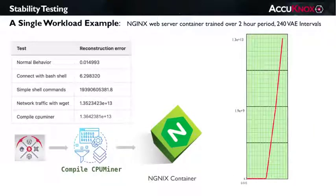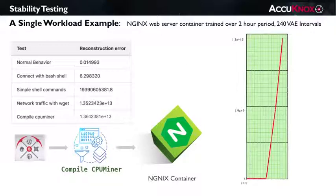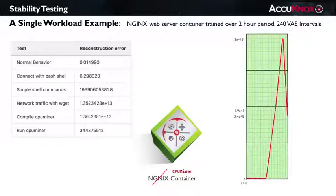I'm now going to download and compile a remote app. In this case, I've grabbed CPUMiner, which hackers often install into hijacked containers to mine Bitcoin. The VAE produces an astronomical reconstruction error as it continues to fully publish the digital forensics for the incident analysis that should no doubt follow. Finally, I replace NGINX with CPUMiner, causing the VAE to continue digital forensics publishing indefinitely, at least until I restore the container back to NGINX.